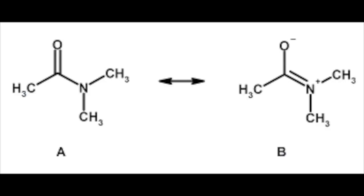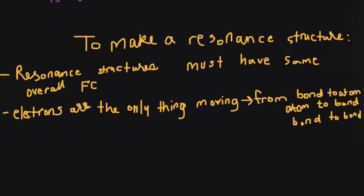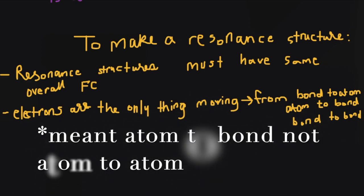Resonance structures are those which have the same chemical interaction between atoms in the compound, however the electron distribution is different. One compound can have several different resonance structures, and there is usually one best structure that we can choose based on our resonance rules. These rules are as follows: resonance structures must have the same overall formal charge, and electrons are the only things that are moving. You can move electrons from bonds to atoms, atom to atom, or bond to bond.